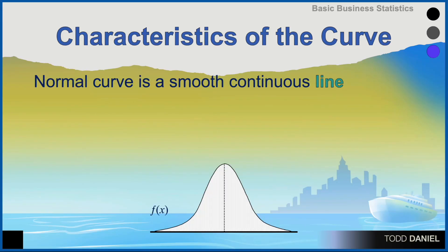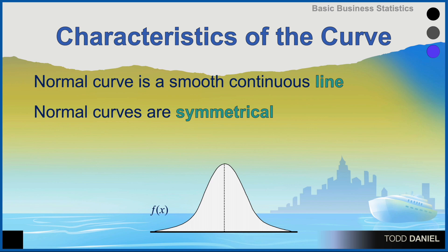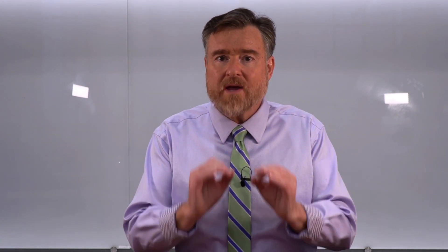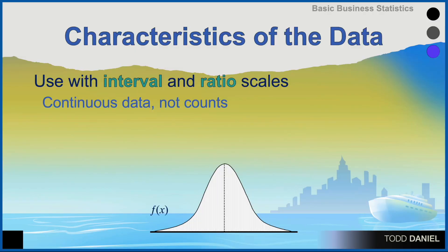The normal curve will be represented by a smooth, continuous line — this is an idealized curve. The halves are symmetrical; the left half is a mirror image of the right half. The measure of skewness in a normal curve is zero. The measure of kurtosis is actually four, but that means the excess kurtosis is zero — excess kurtosis being kurtosis in excess of four. We use a normal distribution with interval and ratio, or scale-level data: continuous data rather than counts.